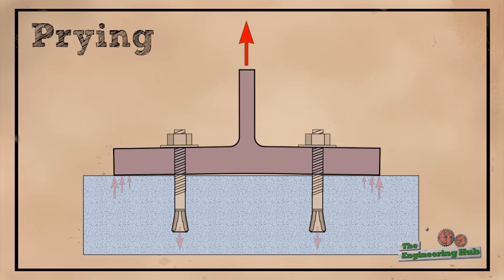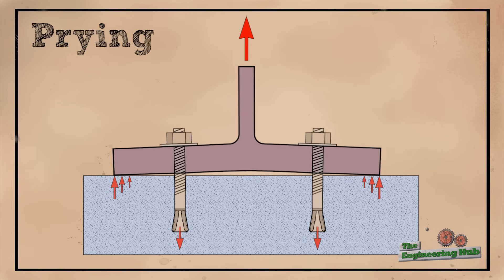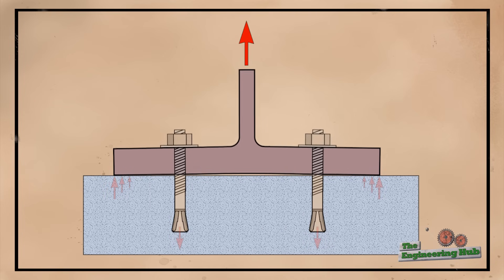Prying is one aspect that often causes concrete anchors to become overloaded. Let's examine a base plate for a post.